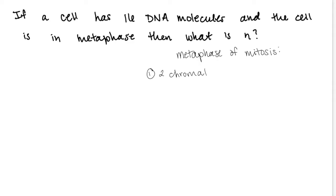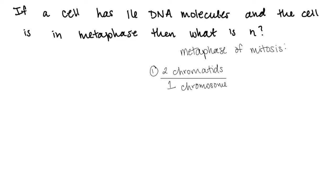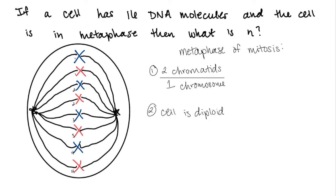And there are 2 things to keep in mind about metaphase of mitosis. The first is that there are 2 chromatids per 1 chromosome. And the second is that the cell is diploid. The cell being diploid means that there are 2 of each type of chromosome. So 2 of chromosome 1, 2 of chromosome 2, 2 of chromosome 3, and 2 of chromosome 4. And as you can see, I've drawn out this picture so that it's easier to visualize what's happening in the cell during metaphase of mitosis.